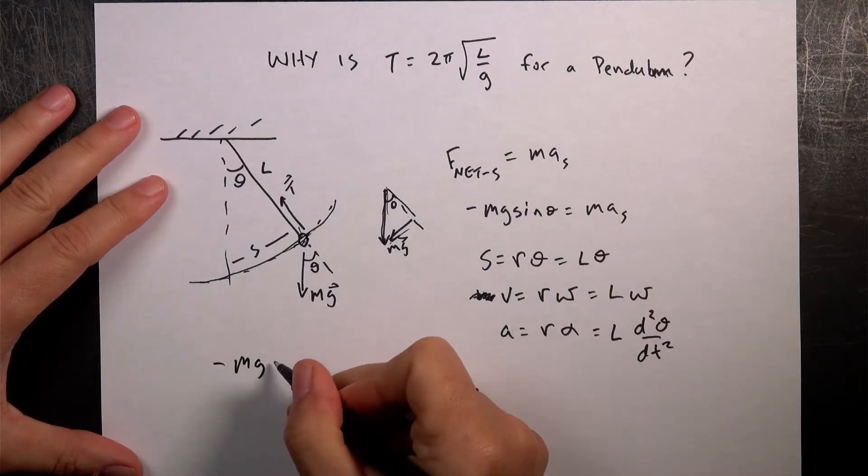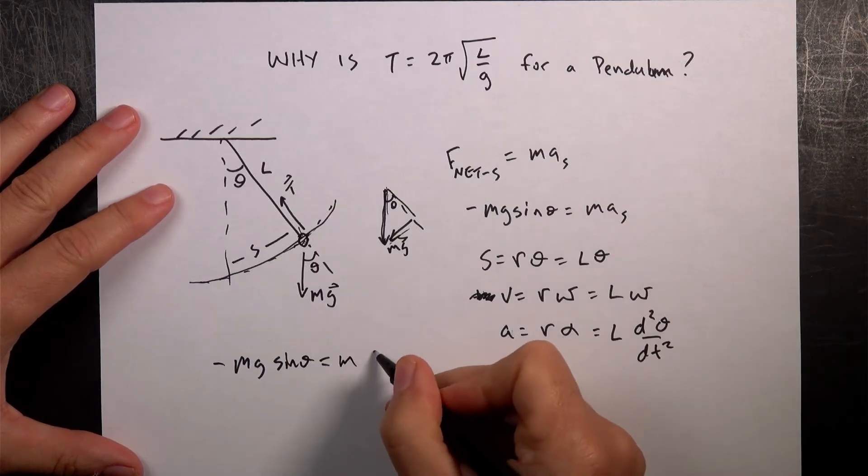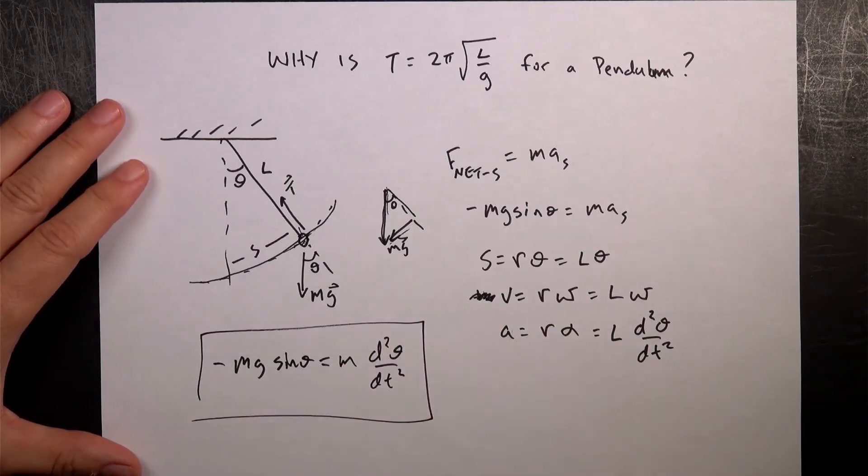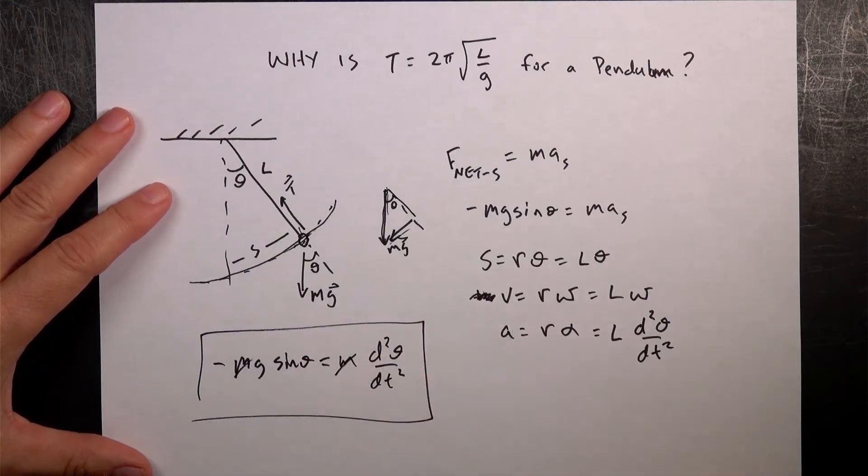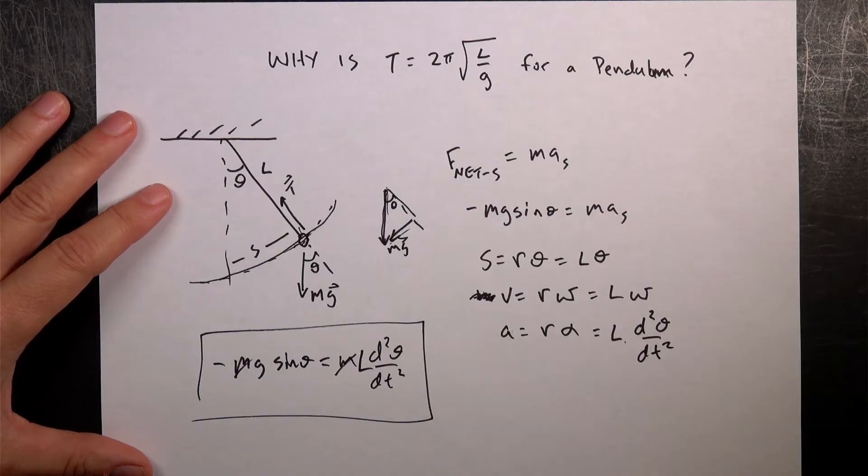So that means that I have, putting all this together, I have negative mg sin theta equals m times L times the second derivative of theta with respect to time. If you wanted to stop right there, you could. We can cancel the mass. That's one thing that cancels. Oh, wait, where did my L go? I forgot my L. Sorry. L.